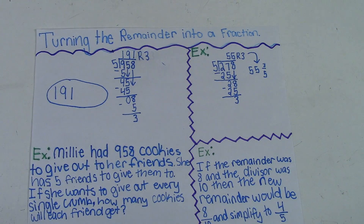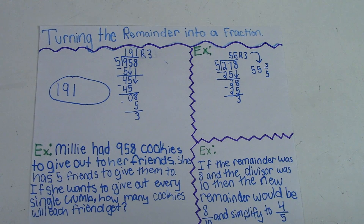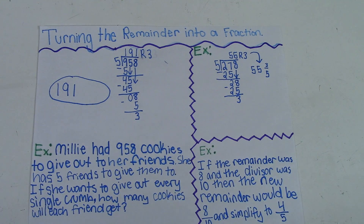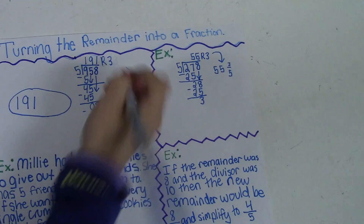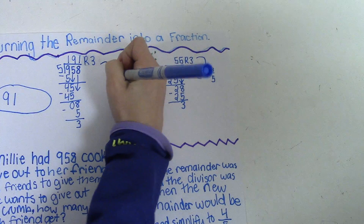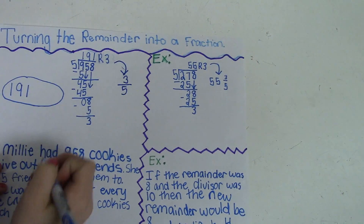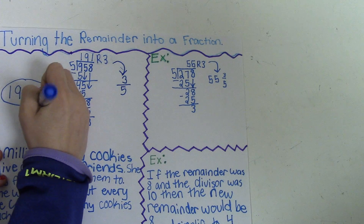Strategy four: turning the remainder into a fraction. Example: Millie had 958 cookies to give out to her friends. She has 5 friends to give them to. If she wants to give out every single crumb, how many cookies will each friend get? I've already solved the problem and the answer is 191 remainder 3. You can't just have a remainder because she wants to give all the cookies out — every single crumb — and it wouldn't be fair if she kept them. So you would switch this remainder and make it into 3 fifths. Every friend would get 191 and 3 fifths of a cookie.